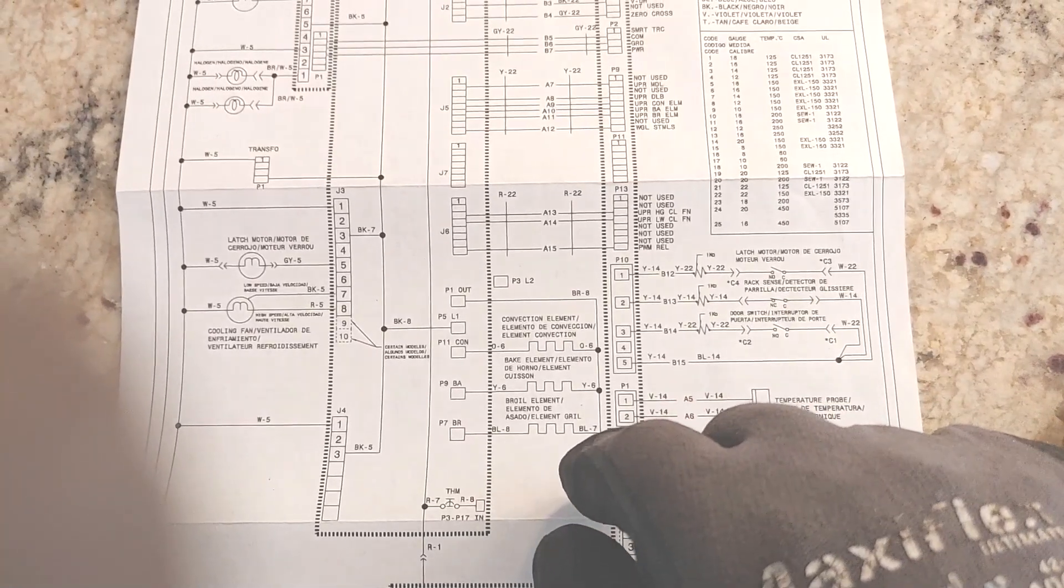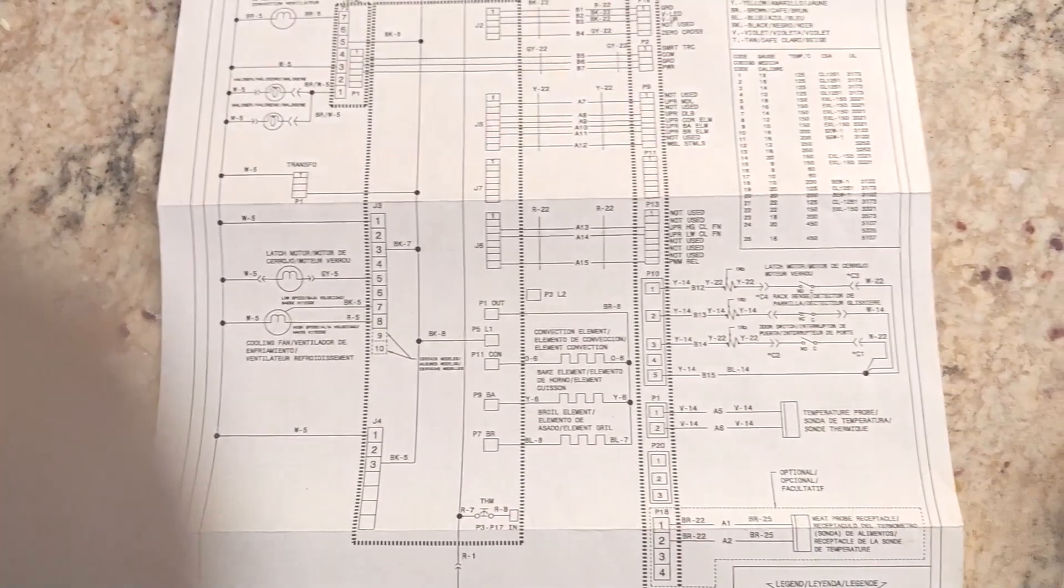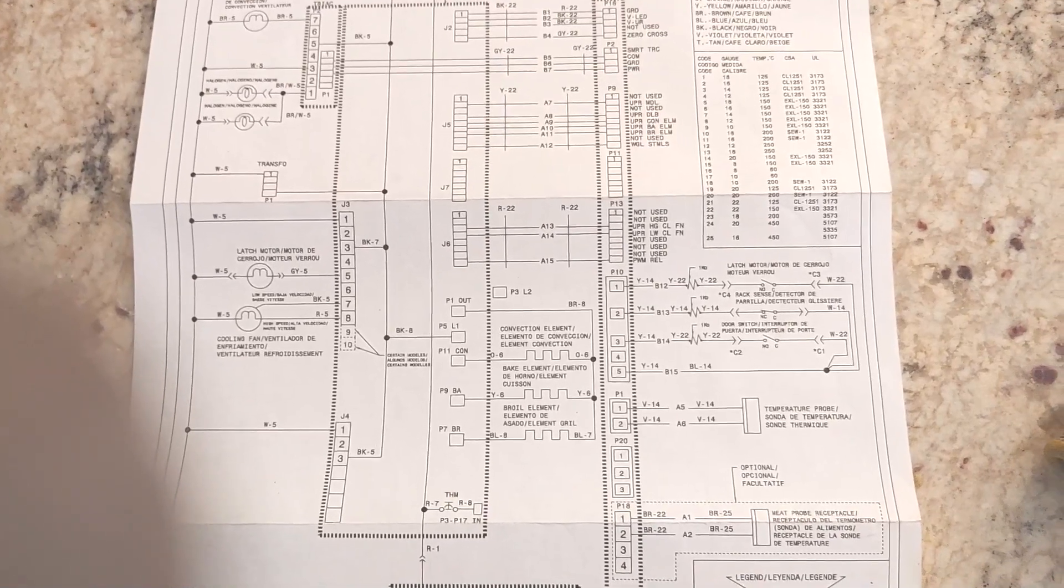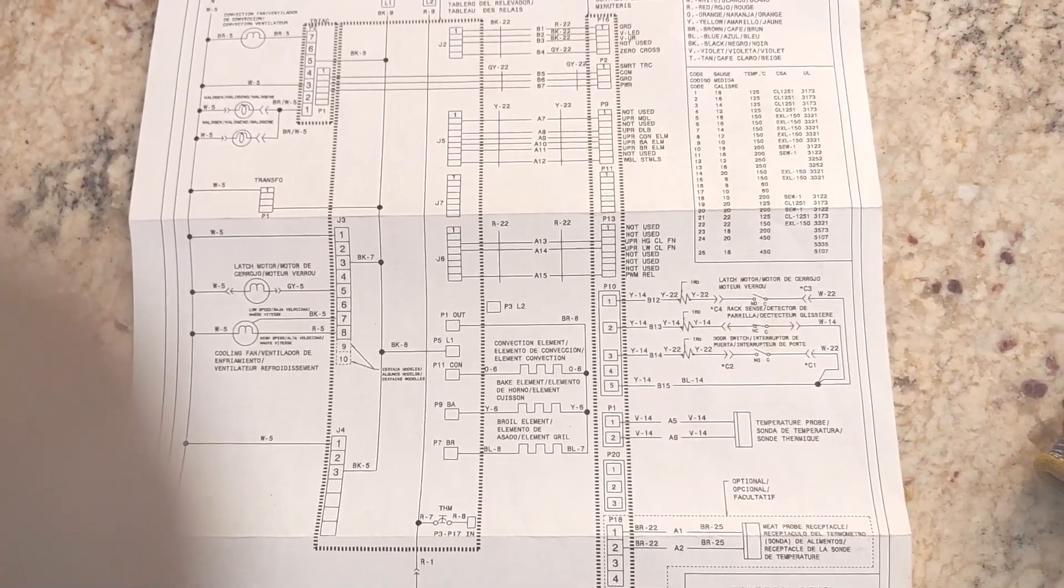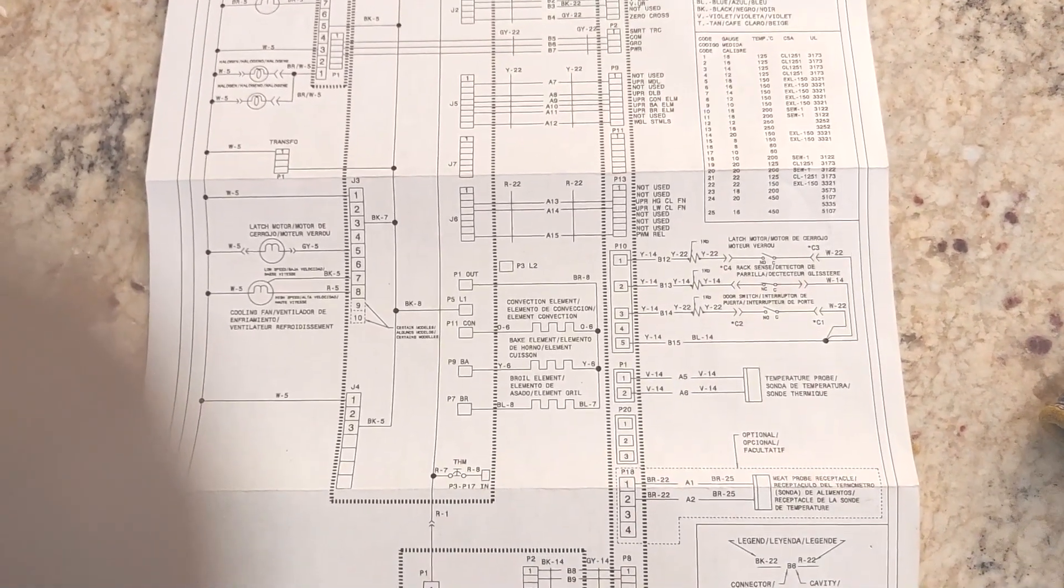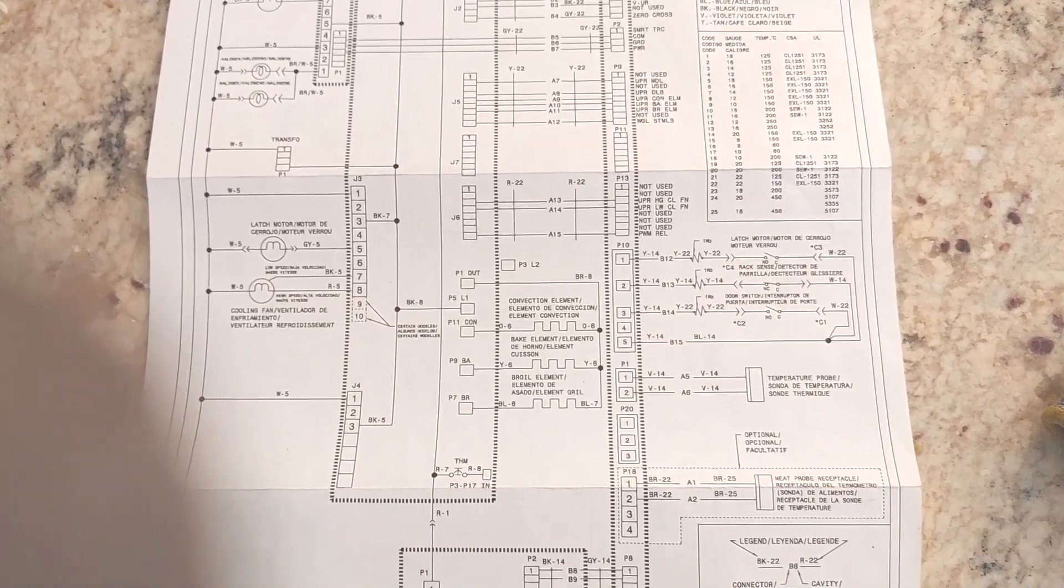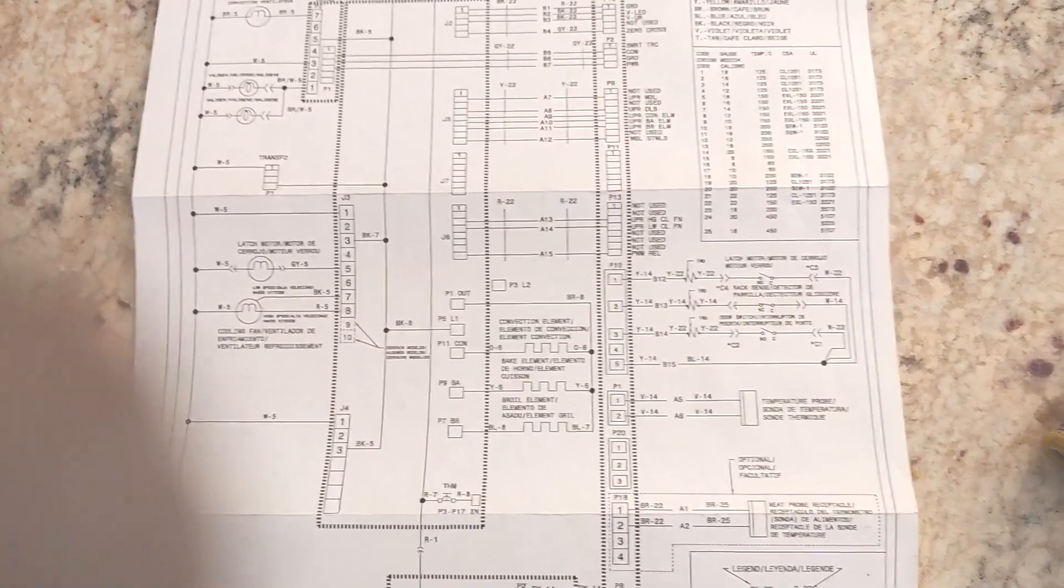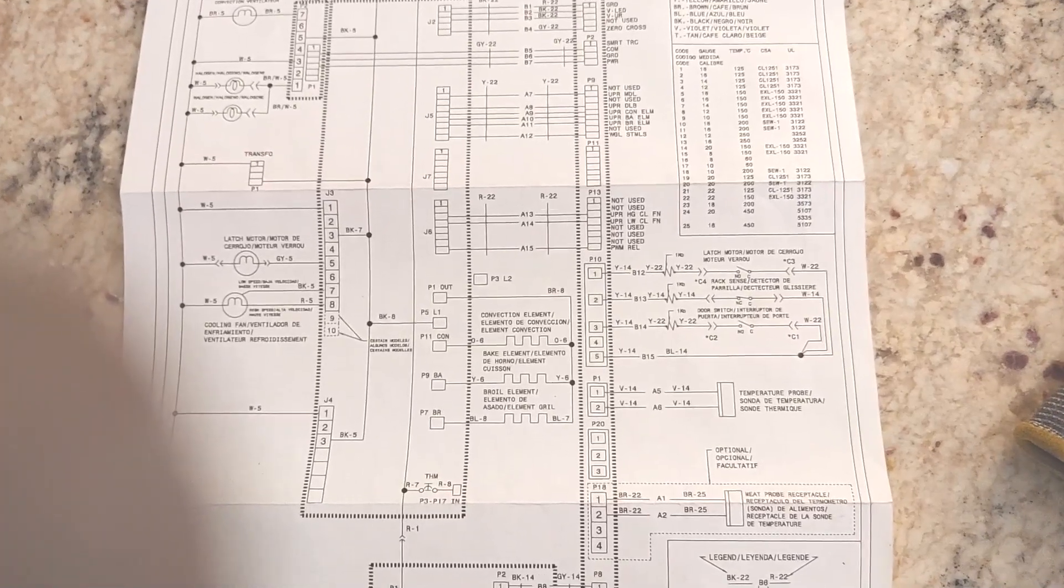When this one was preheating, it uses the bake and the broil to actually preheat, so it will preheat and get to the right temperature because the broil is actually working. But the bake element is actually burned out, so once it preheats it won't be able to keep that temperature.